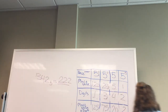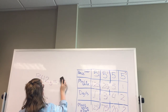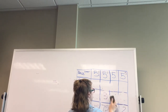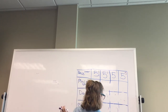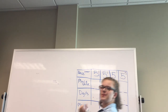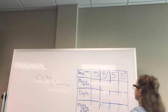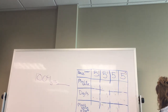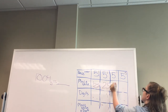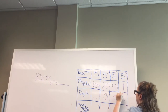Fifteen minutes has passed, so let's go over the problems. The first problem was 1004 base five equals blank. Our place values are: five to the third is 125, five to the second is 25, five to the first is five, and five to the zero is one. The digits are one, zero, zero, and four.